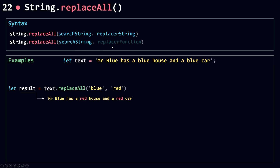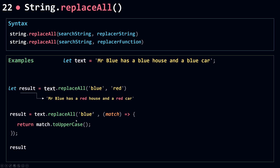replaceAll can also take a function as the second parameter — a replacer function. I call replaceAll with 'blue' as the search string and pass in a function. The first parameter is the match itself, so the match is 'blue', and I uppercase it. Because this is replaceAll, it doesn't replace only the first match — it replaces all the matches as well. So both matches are now uppercased in the result.